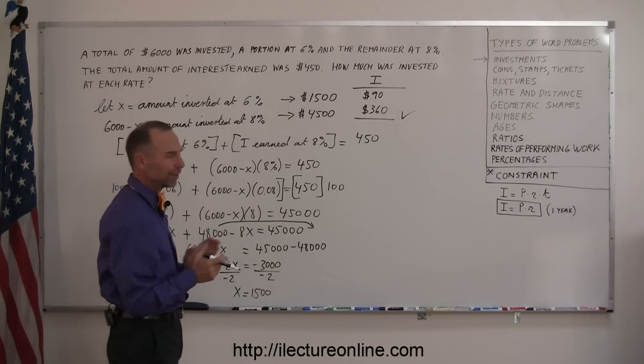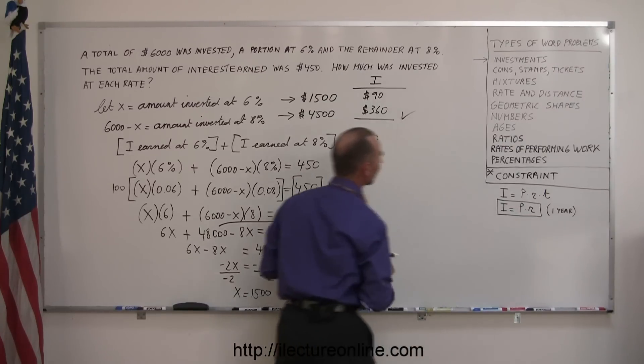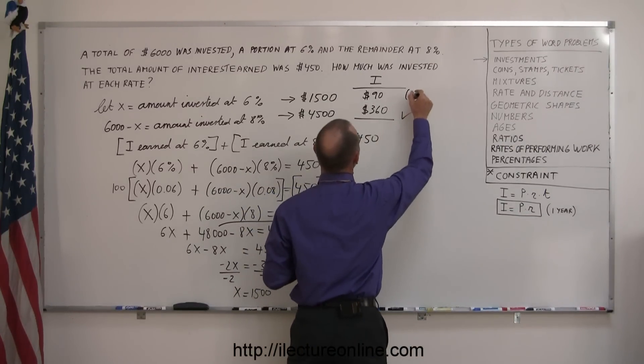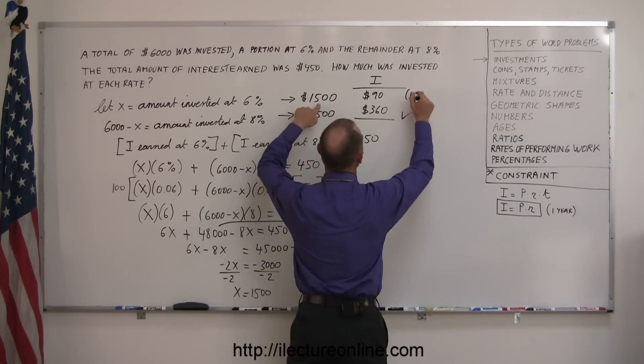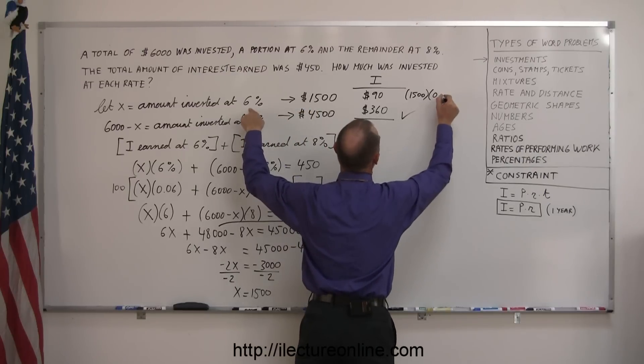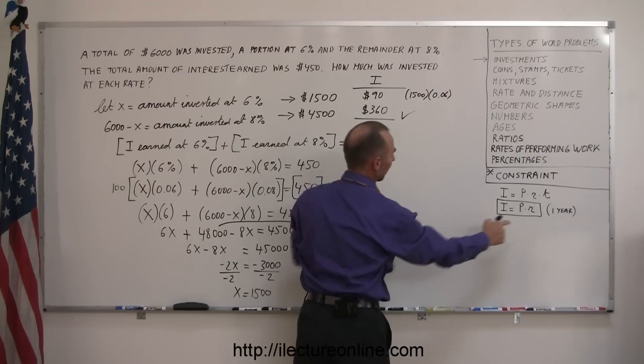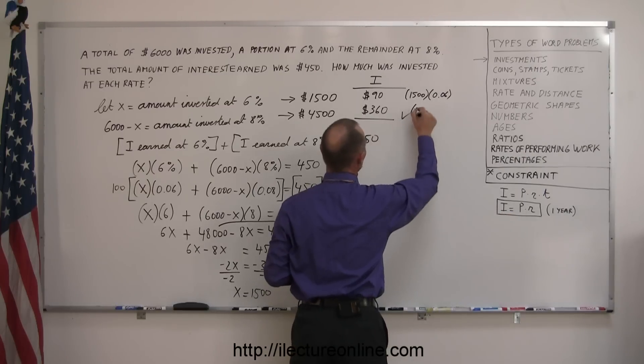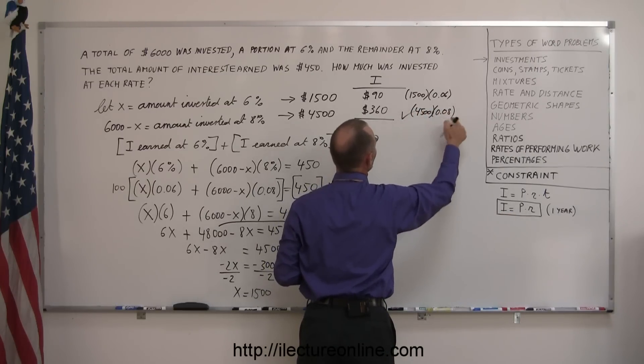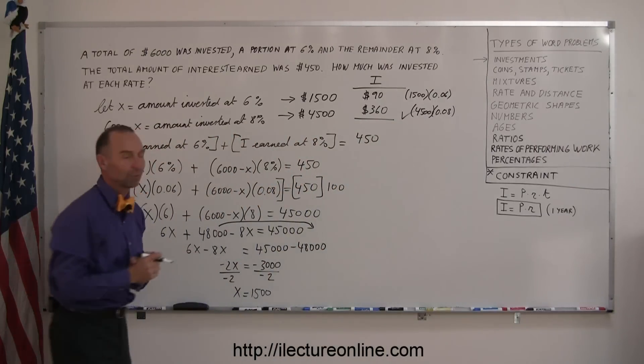Now, if you say, well, what did he do over here? I didn't quite get that. Well, what I quickly did is I applied this equation right here. I took the principal, so I said, $1,500 times the 6%, which is 0.06. When I multiply these two together, I get 90. And over here, I took principal times rate, so I took the 4,500 times 0.08. Quickly did that in my head and said, ah, 360, together it adds up to 450.